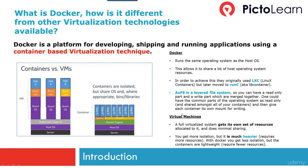The hypervisor has a guest operating system, and the guest operating system has all the software and applications which are installed. On the other hand, the Docker engine does not have a guest operating system. Docker runs the same operating system as the host operating system, which allows us to share all the resources of the host operating system. To achieve this, the team at Docker originally used Linux containers, also called LXC, but later moved to runC, also called lib containers.